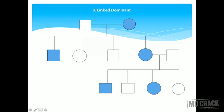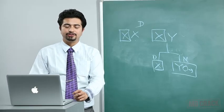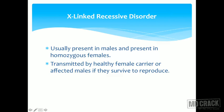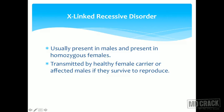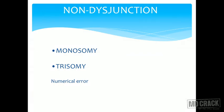X-linked recessive disorders usually present in males and in homozygous females. They are transmitted by healthy female carriers and by affected males if they survive to reproduce. There is a long list of X-linked recessive disorders.